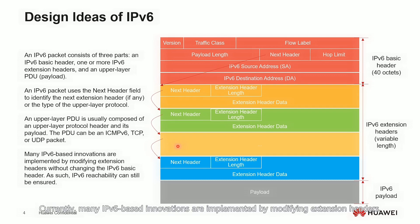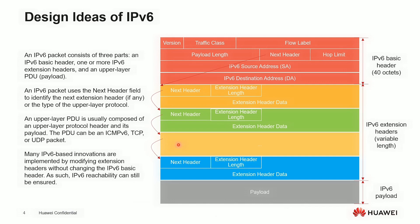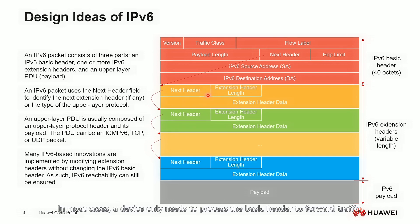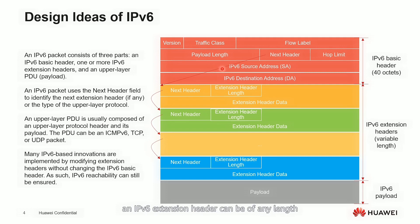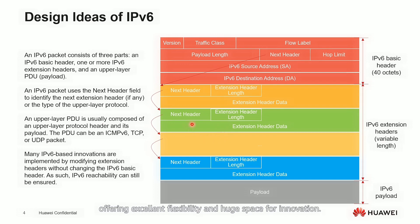Currently, many IPv6-based innovations are implemented by modifying extension headers. What are the advantages of doing so? The structure of the IPv6 basic header is not changed. In most cases, a device only needs to process the basic header to forward traffic, ensuring IPv6 reachability. Moreover, an IPv6 extension header can be of any length and can theoretically be extended indefinitely, offering excellent flexibility and a huge space for innovation.